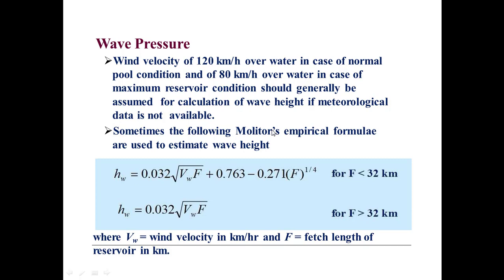The formulas are: Hw = 0.032√(Vw·F) + 0.763 - 0.271(F)^(1/4), for F < 32 km. The next is Hw = 0.032√(Vw·F),